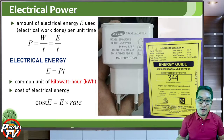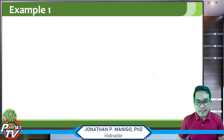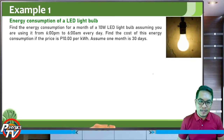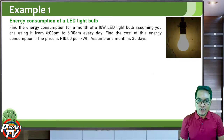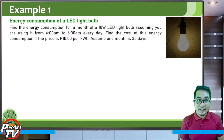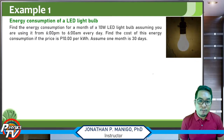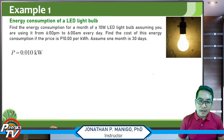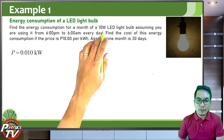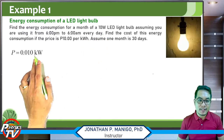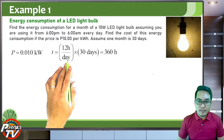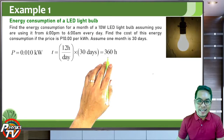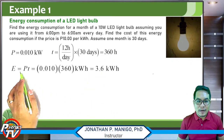Let's have an example: energy consumption of an LED light bulb. Find the energy consumption for one month of a 10-watt LED light bulb, assuming you use it from 6 PM to 6 AM every day, and find the cost if the price is 10 pesos per kilowatt-hour, assuming one month is 30 days. The power is 10 watts, which we convert to 0.010 kilowatts. The time is 12 hours per day times 30 days, giving 360 hours total.